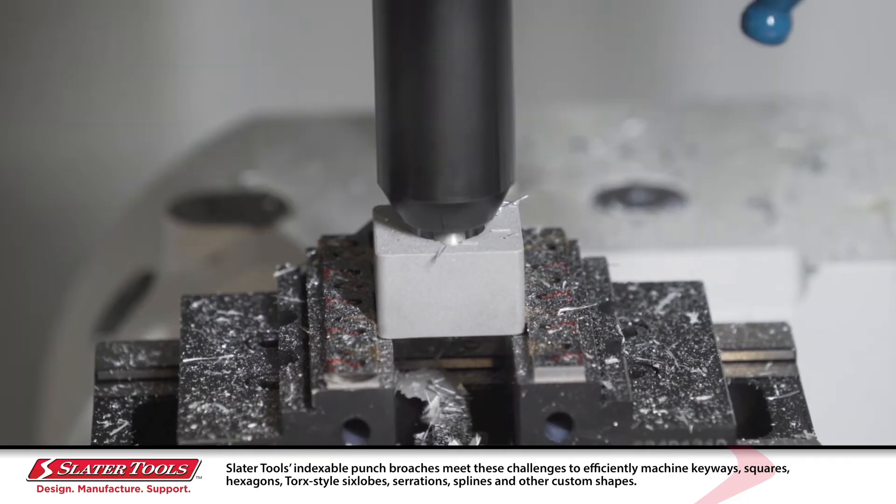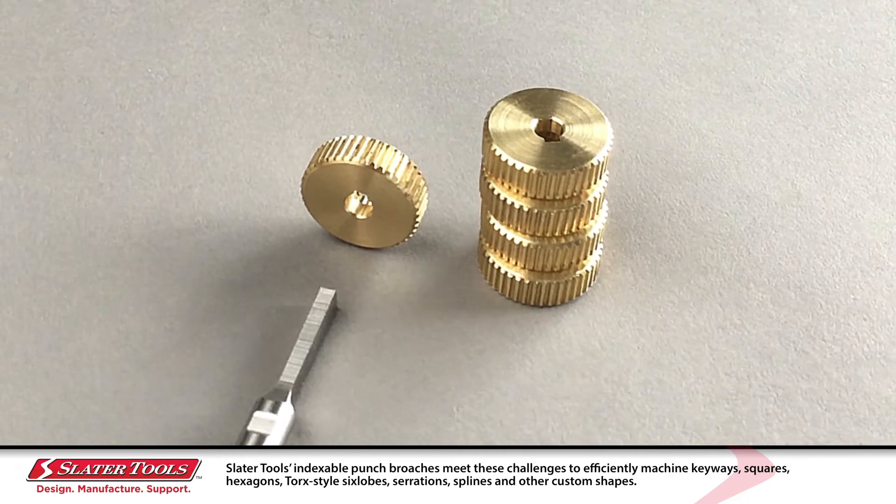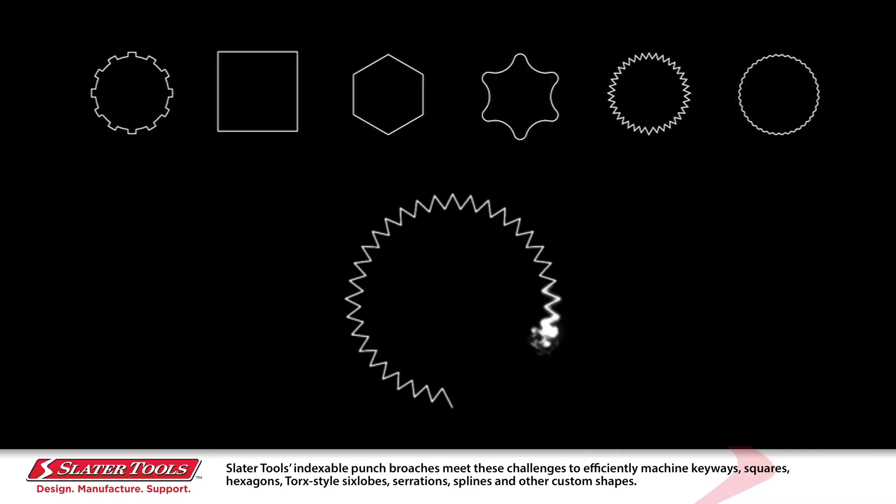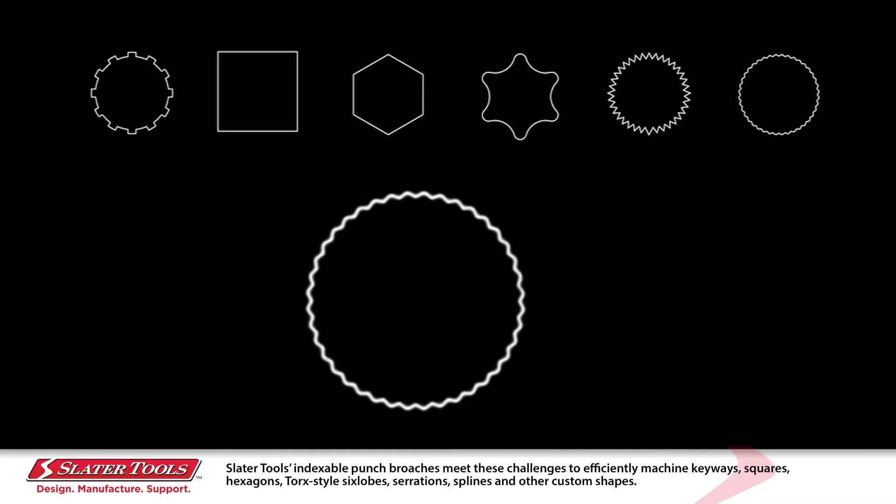Slater Tools indexable punch broaches meet these challenges to efficiently machine keyways, squares, hexagons, torque style six lobes, serrations, splines, and other custom shapes.